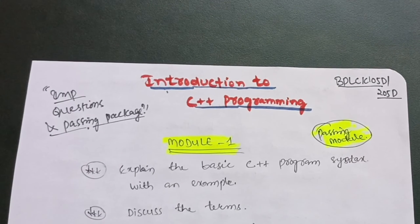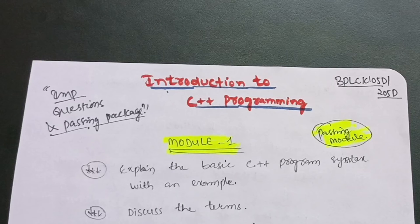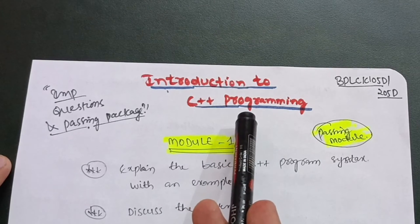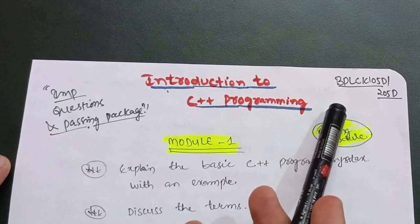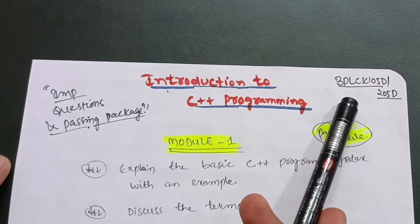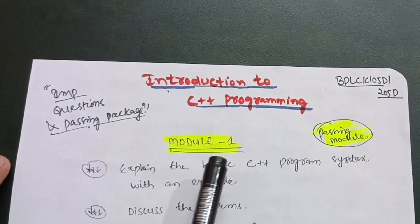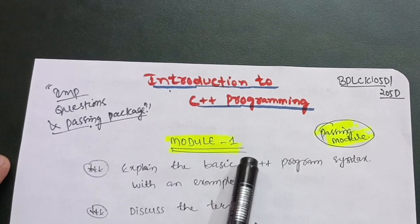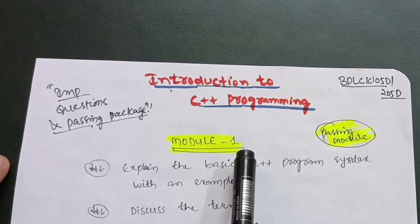Hello friends, welcome back. Today I am with another important questions and passing package video for the Introduction to C++ Programming subject for second semester students under the 2022 scheme VTU. The subject code is BPLCK105D or 205D. In this particular subject, there are three passing modules by which you can easily pass, and if you want to score, you need to cover two additional modules as well.